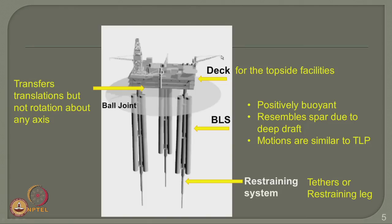The topside consists of a deck which houses all necessary topside facilities required for oil and gas exploration, production and partly processing. For example, you can see a flare mast, a crane, a drilling derrick, and living quarters. These are common topside facilities generally provided in all platforms meant for deep water oil exploration and production. The deck is connected to the bottom structural form, which we call the buoyant leg structure, abbreviated as BLS.